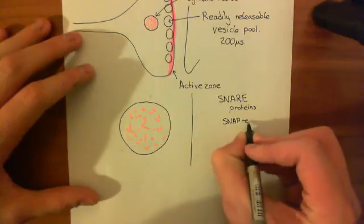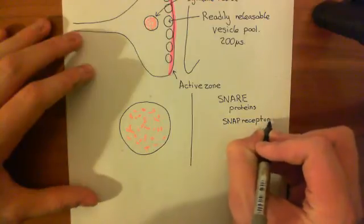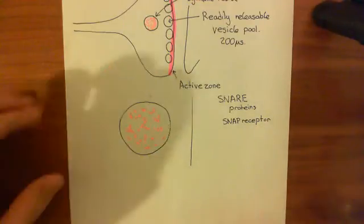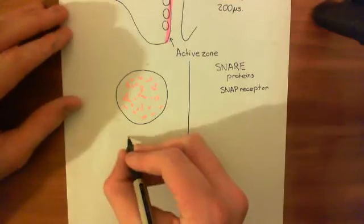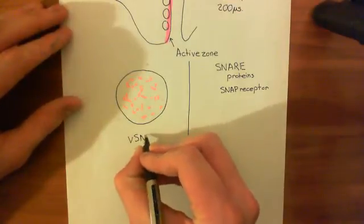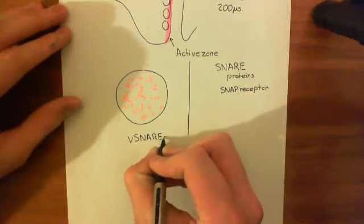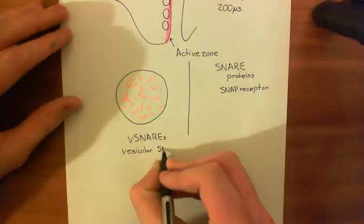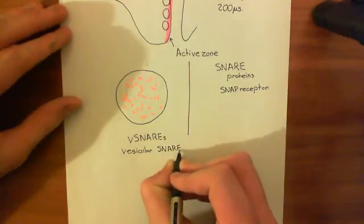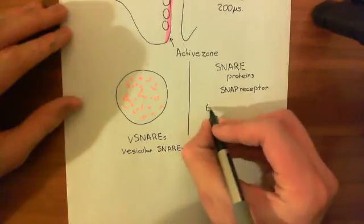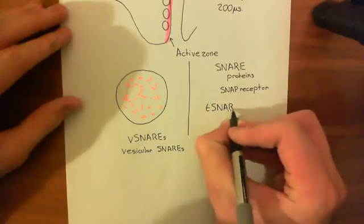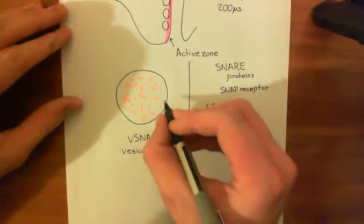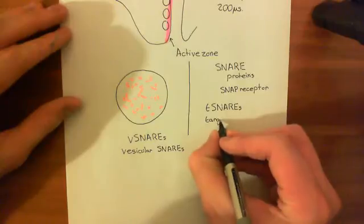SNAREs can be divided broadly into two types. The V-SNAREs, or vesicular SNAREs, are associated with the vesicle — they're in the membrane of the vesicle. The other broad class are the ones attached to the plasma membrane, and those are called T-SNAREs. The T in T-SNAREs stands for target SNAREs, because in this case the plasma membrane is viewed as the target membrane which the vesicle is going to fuse with.